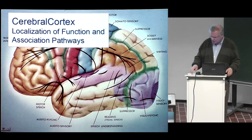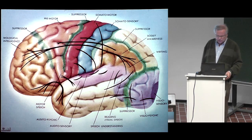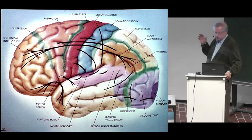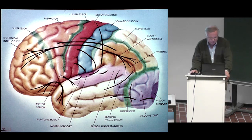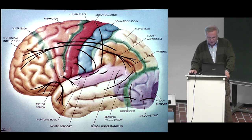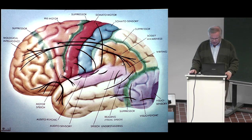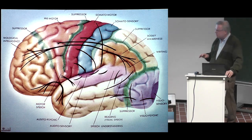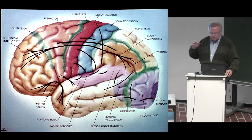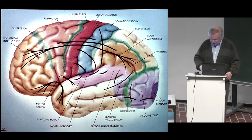There is a lot of information available on the localization, function, and association pathways of the cortex. I just want to mention that in the frontal lobe there is the biological intelligence of man, and there are the regions for motoric and sensory functions. It is possible to find regions concentrated on such functions as writing, speech, understanding, reading, and so on. Please do not think that the borders between different functions are very accurate — they are rather flexible.